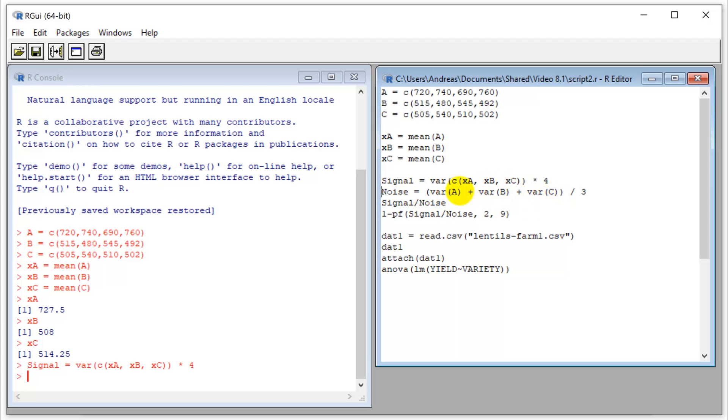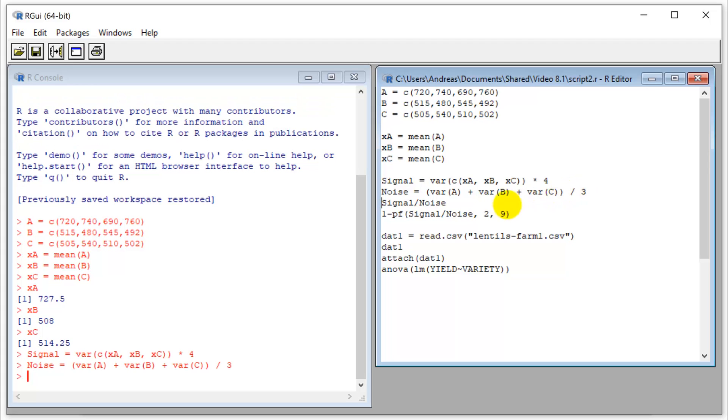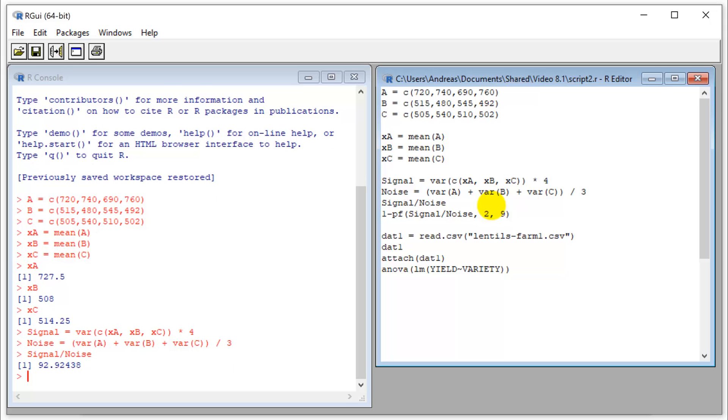My noise is simply the average of the variances. I just add them up here and divide by three. Run this. Then we can look at our signal to noise ratio. That's a big number, very good. That's certainly bigger than one.